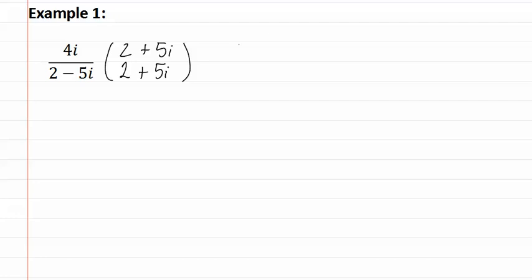We distribute through on the top, giving us eight i plus twenty i squared. And on the bottom, we get four plus ten i minus ten i minus twenty-five i squared.